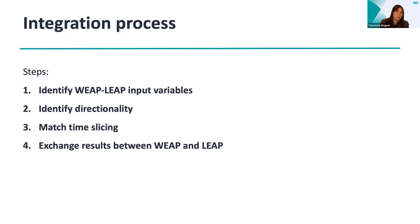The third important point is that you have to match your time slicing. If you think about a hydropower plant where you depend on physical, seasonal water availability, monthly time slicing may be the way you want to set up both models. You have to make sure the time slicing matches between your models — you cannot run LEAP on one type of time slicing and then use a different type of time slicing in WEAP.